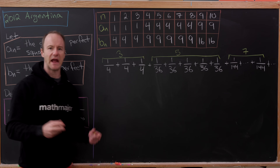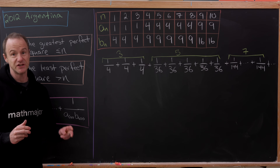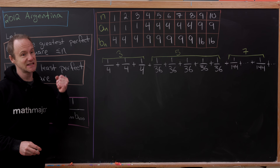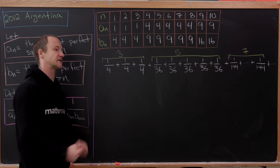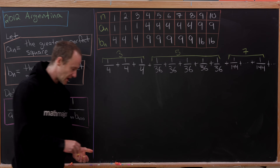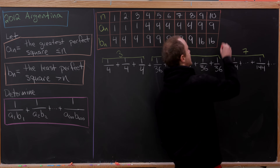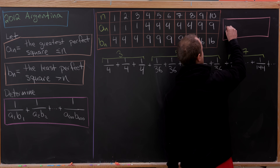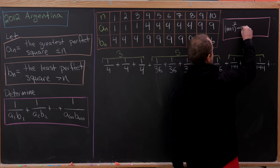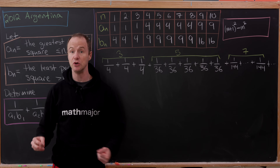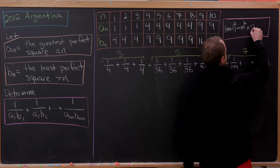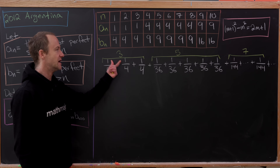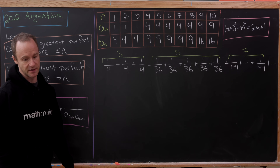Why do we have an odd number of each of these chunks? Because the distance from one perfect square to the next is an odd number. Specifically, (m+1)² − m² = 2m + 1. That's why we're getting consecutive odd-numbered chunks.